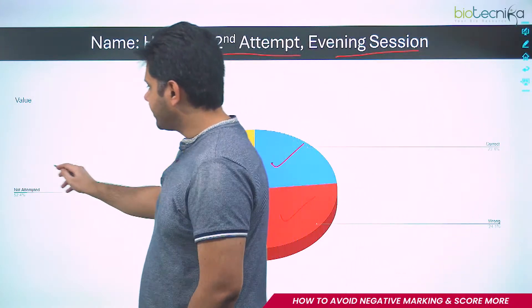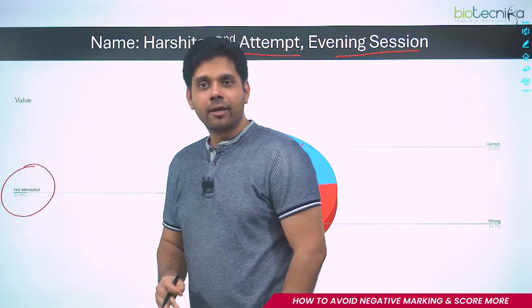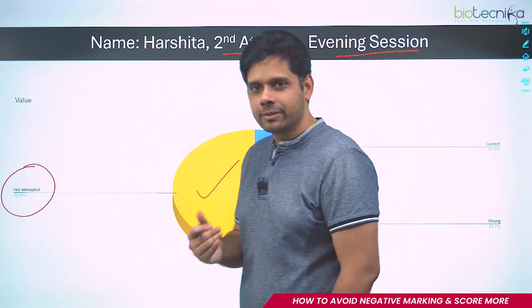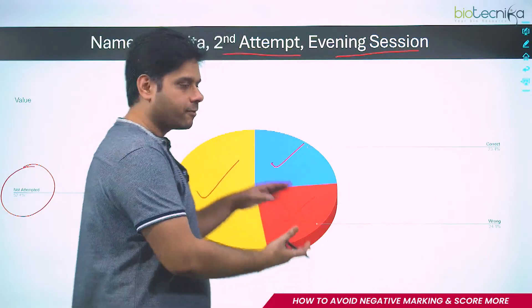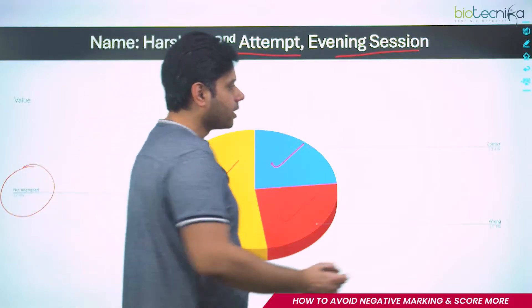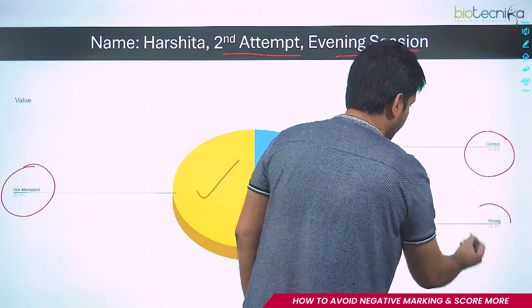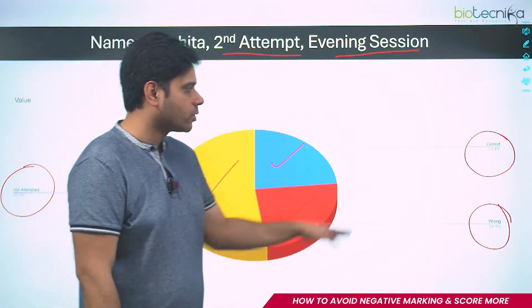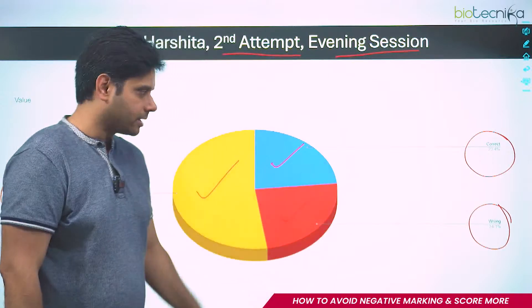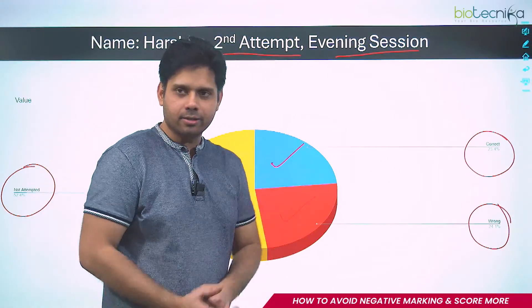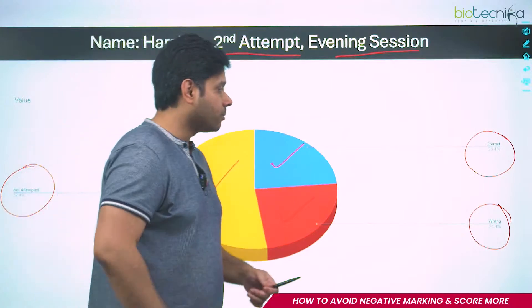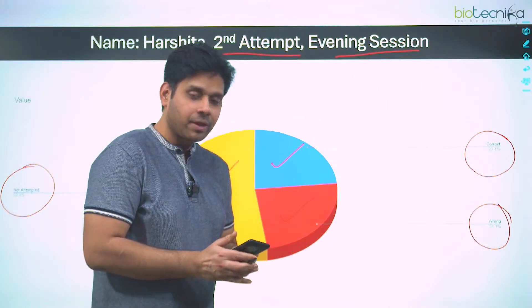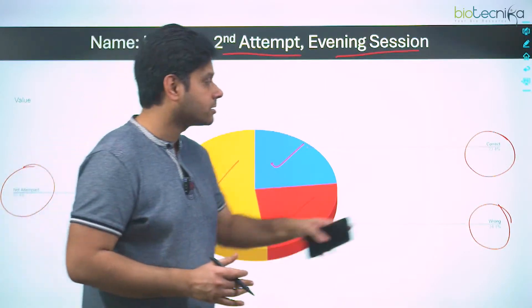What we see is 52% of the questions she did not attempt. That means she attempted 48%, with the breakup being 23% correct and 24% wrong. With this data, we can see almost equal correct and wrong, but she's losing marks on wrong answers and gaining on correct ones. Everyone, tell me in the chat box — how will she maximize her marks?